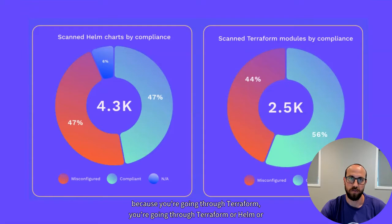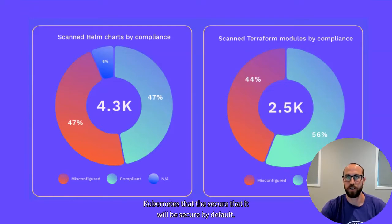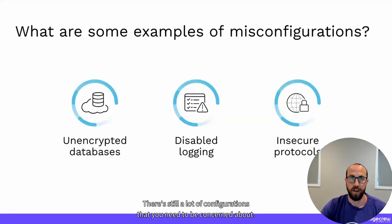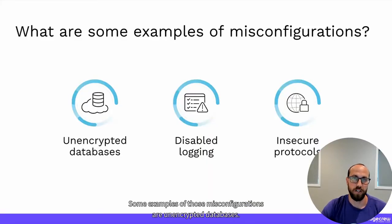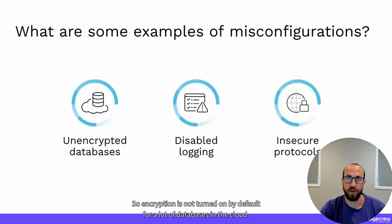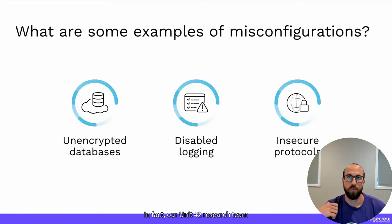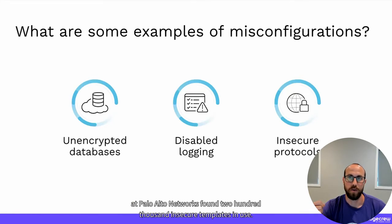So it's not safe to assume that just because you're using Terraform, Helm, or Kubernetes it will be secured by default — there are still a lot of configurations to be concerned about. Our Unit 42 research team at Palo Alto Networks found 200,000 insecure templates actually in use, not just in a registry or repo.